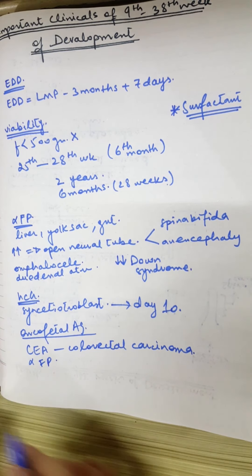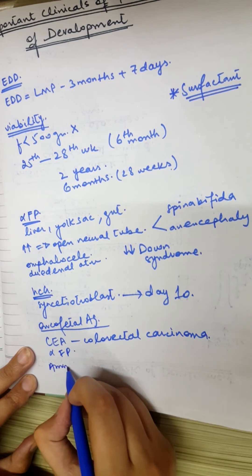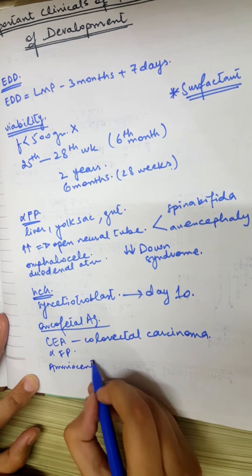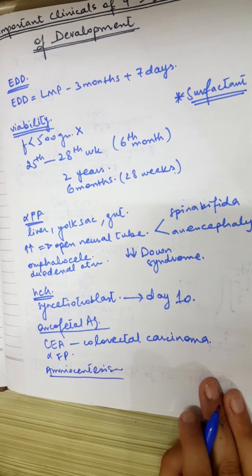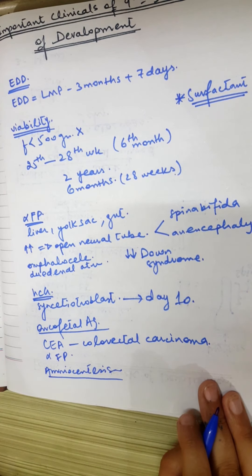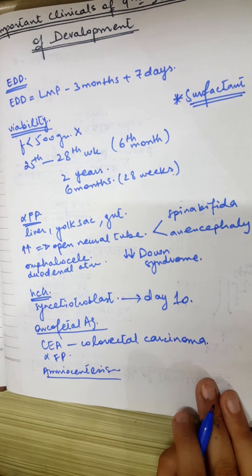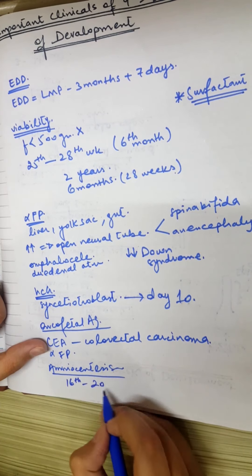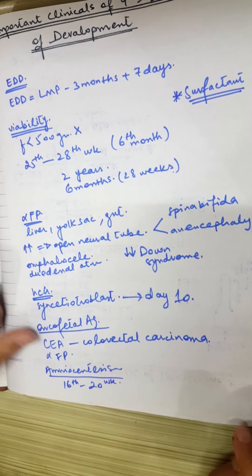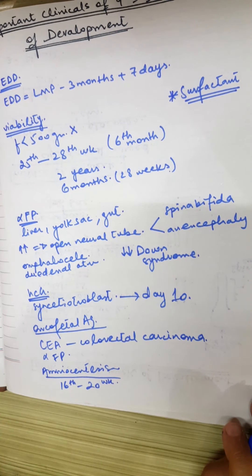Next is amniocentesis. Amniocentesis is the aspiration of a small amount of amniotic fluid in order to detect fetal abnormalities such as Down syndrome or Tay-Sachs disease. It is mostly done between the 16th to 20th week. Before this period, the amniotic fluid is in very low quantity, making it unsafe.